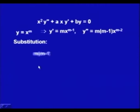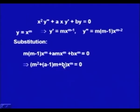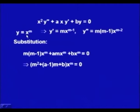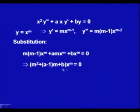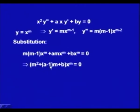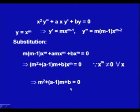Substituting y = x^m, we get m(m−1) x^m + a·m x^m + b x^m = 0, which simplifies to [m² + (a−1)m + b] x^m = 0. For a non-trivial solution x^m ≠ 0, so we require m² + (a−1)m + b = 0. This is called the characteristic or auxiliary equation.